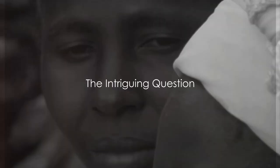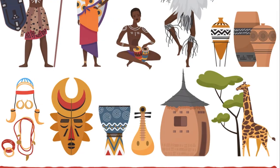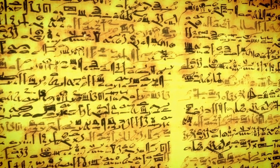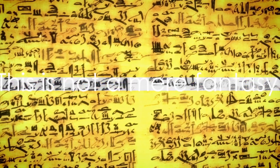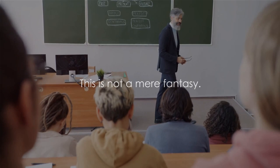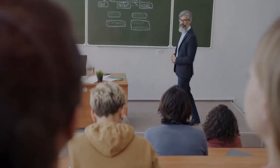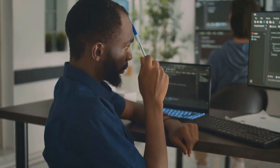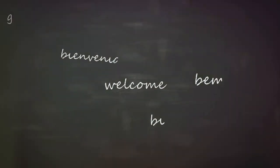Have you ever wondered if the languages spoken by millions across Africa are connected in some way? Imagine a web of words, phrases, and sounds intricately woven together, spanning the vast expanse of the African continent. This is not a mere fantasy — it's a hypothesis that seeks to link the diversity of human communication under a single umbrella: the Nilo-Saharan languages. Could there be a common linguistic ancestry for these languages? That's exactly what the Nilo-Saharan languages hypothesis proposes.